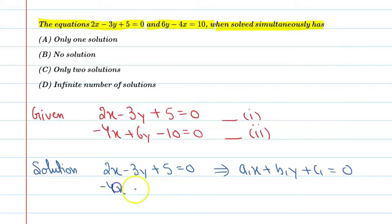And this is equal to a1x plus b1y plus c1 equal to 0. Similarly, second equation can be represented in this way: minus 4x plus 6y minus 10 equal to 0, and it can be represented as a2x plus b2y plus c2 equal to 0.